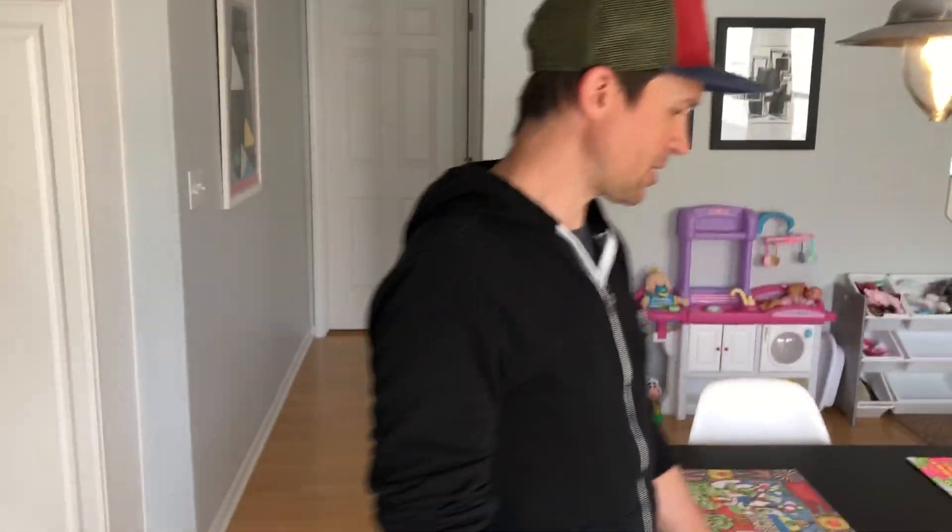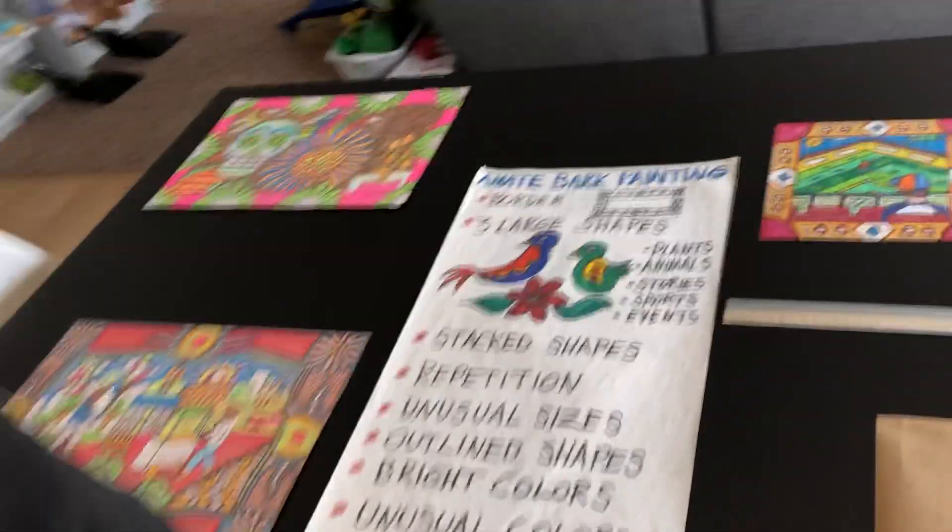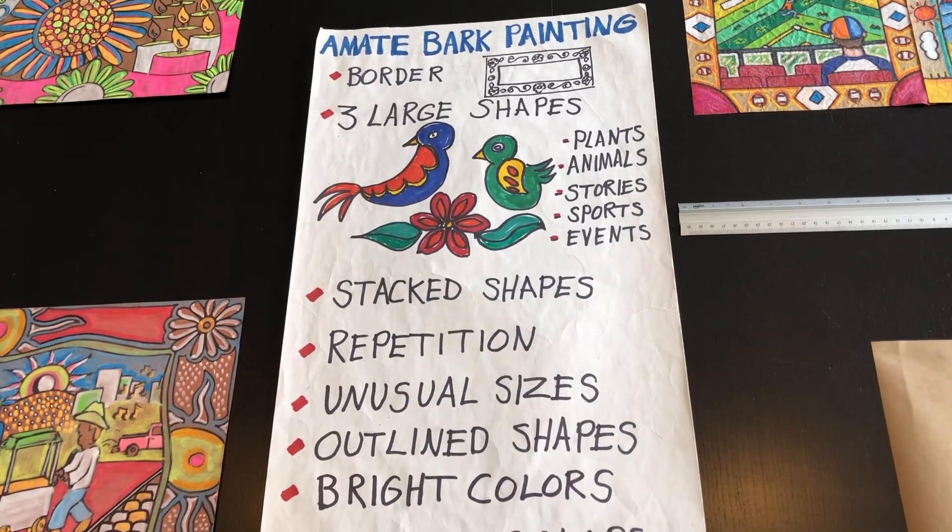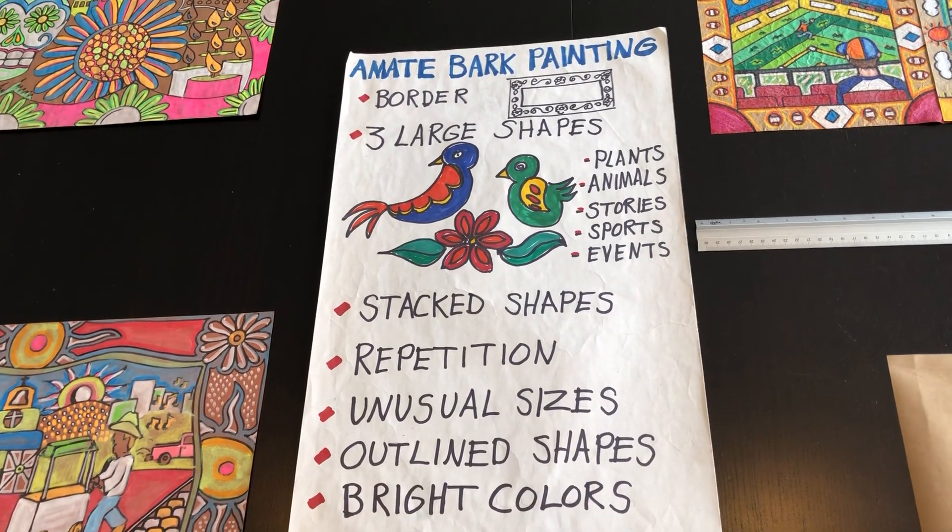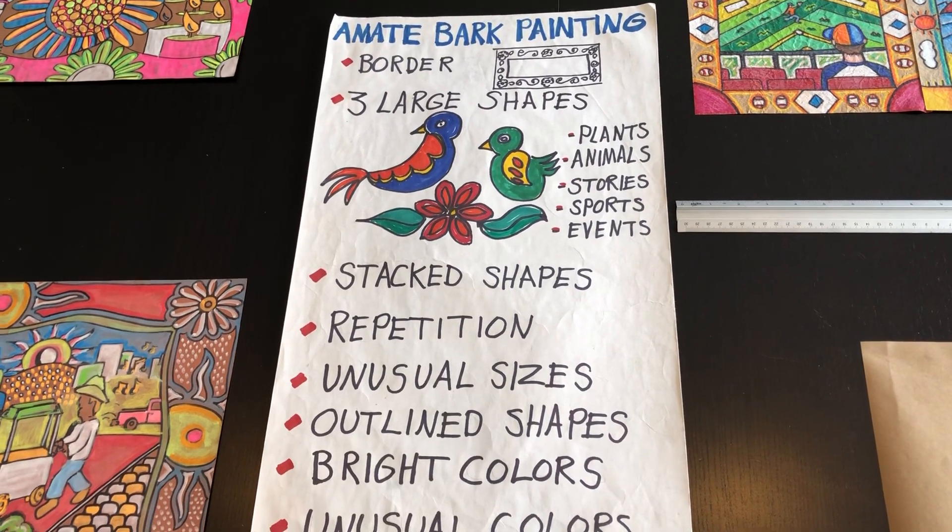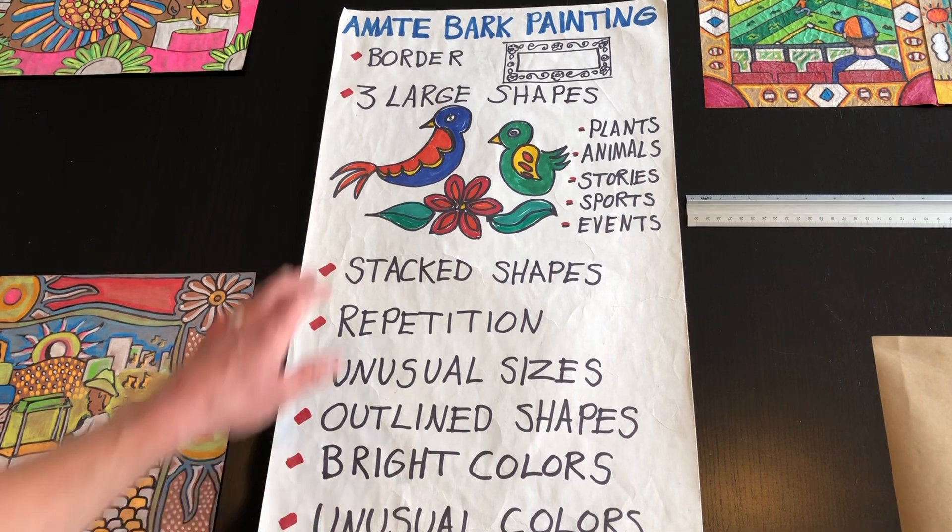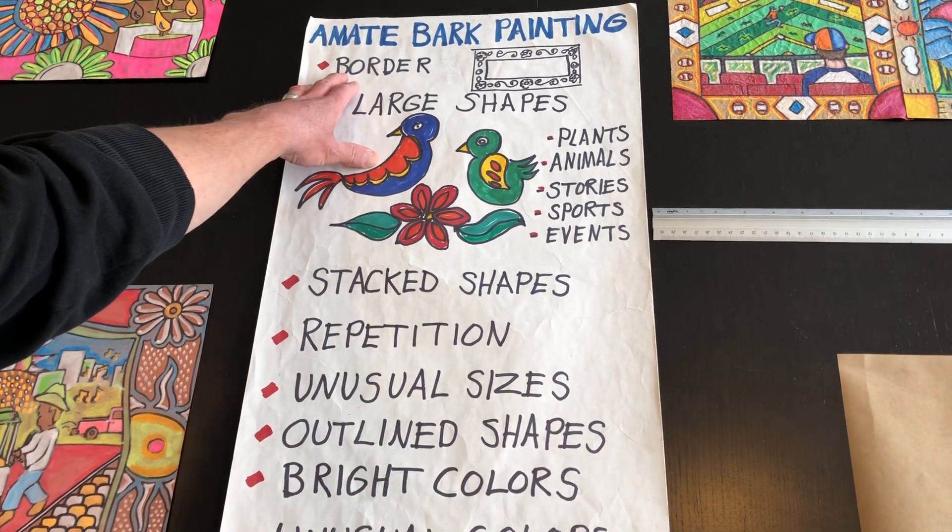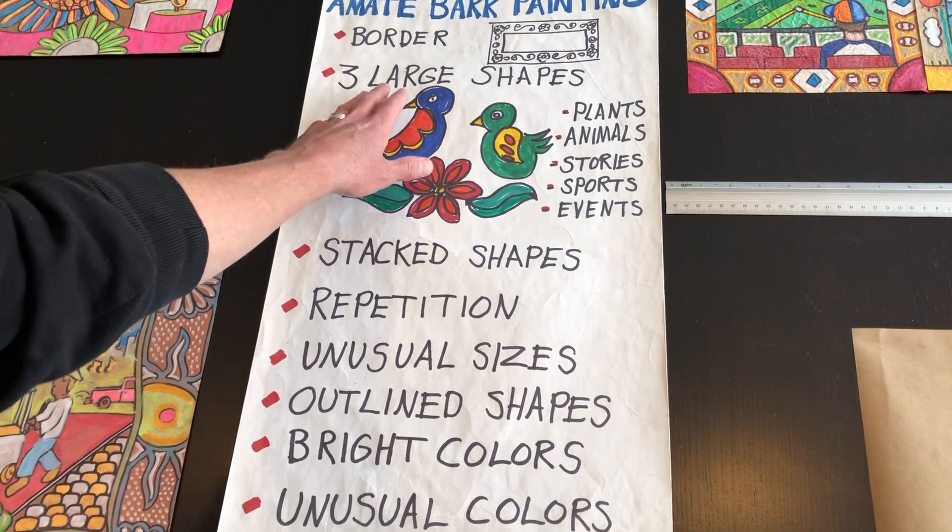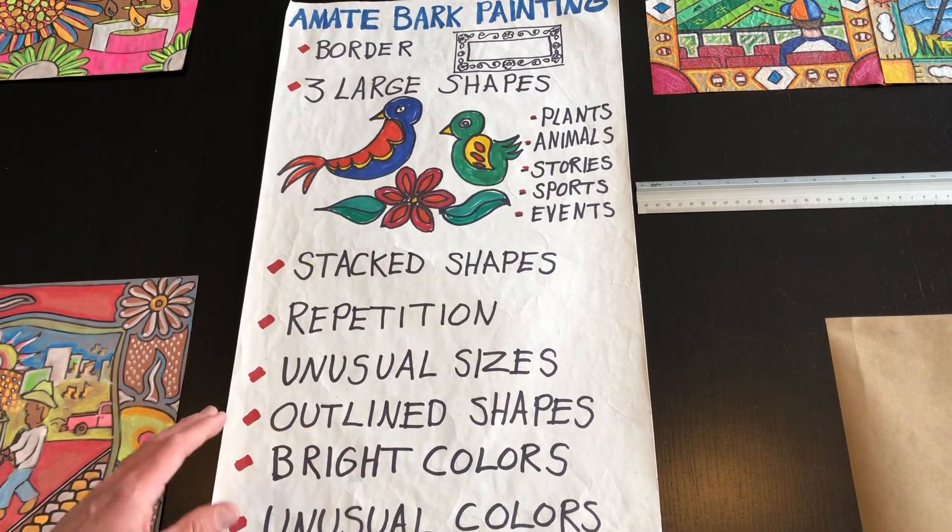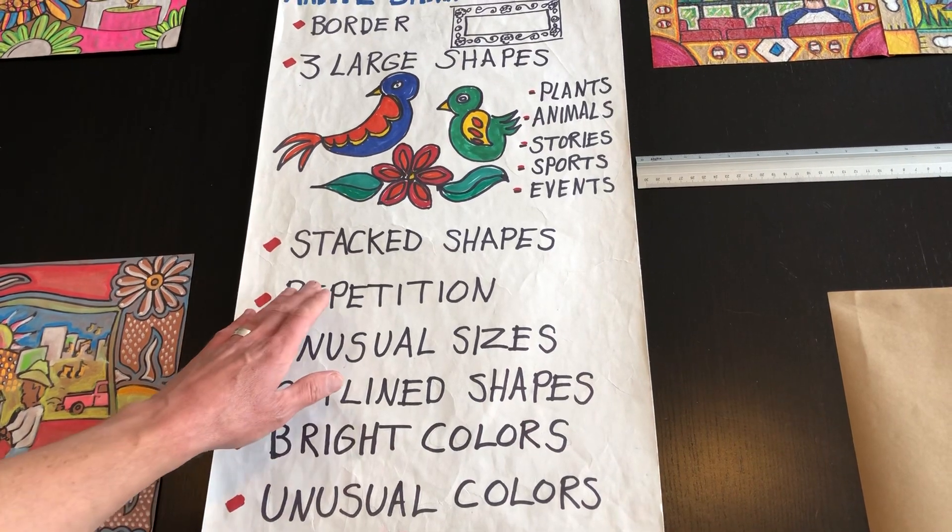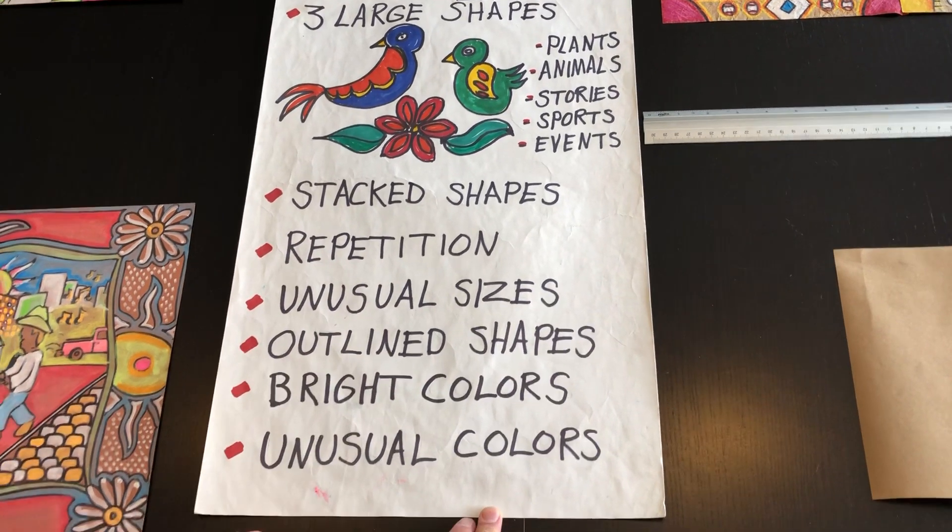Let me show you a few examples. I'm going to take some pictures and put these as part of the lesson. This poster shows some of the things that I would include in your Amate bark painting or drawing, whatever materials you have. I'm going to make mine a drawing. I'm going to start off with a border, then I'm going to do three large shapes, and then around those shapes I'm going to stack shapes in between.